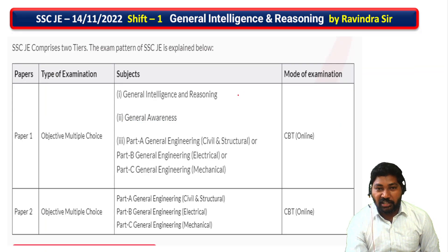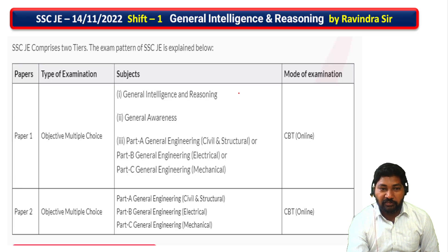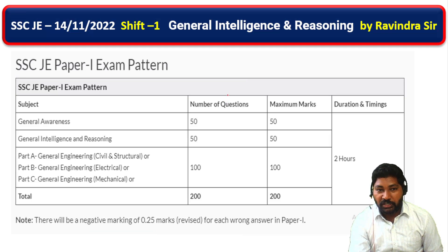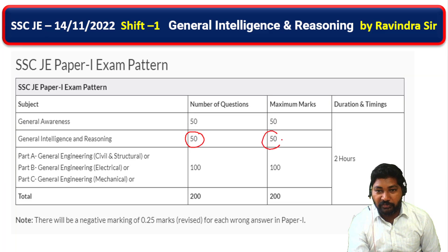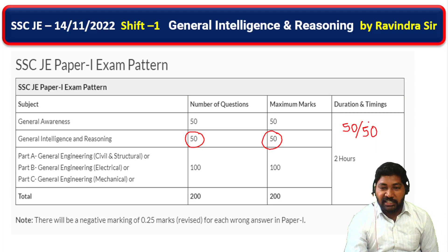If you want to get 50 out of 50, it is easy. The exam pattern is SSC JE Tier 1, Paper 1. The first topic is General Intelligence and Reasoning. The subject carries a total of 50 marks, out of a maximum 200 marks for the full exam. It is very helpful. The topic is very easy and scoring.